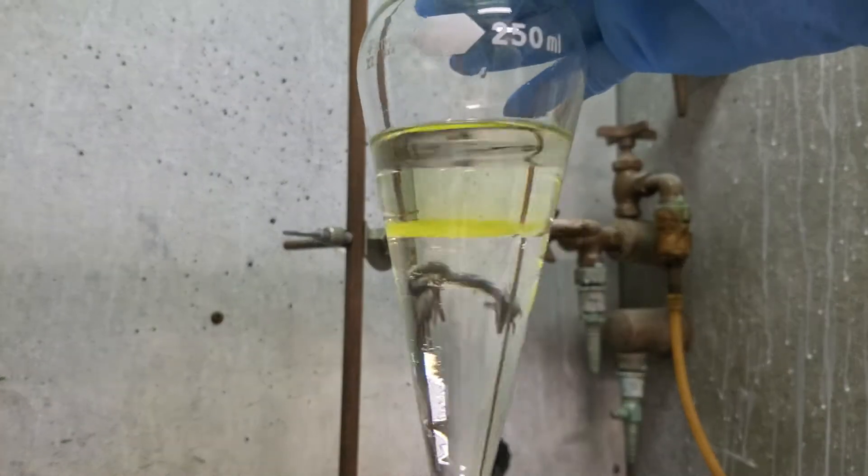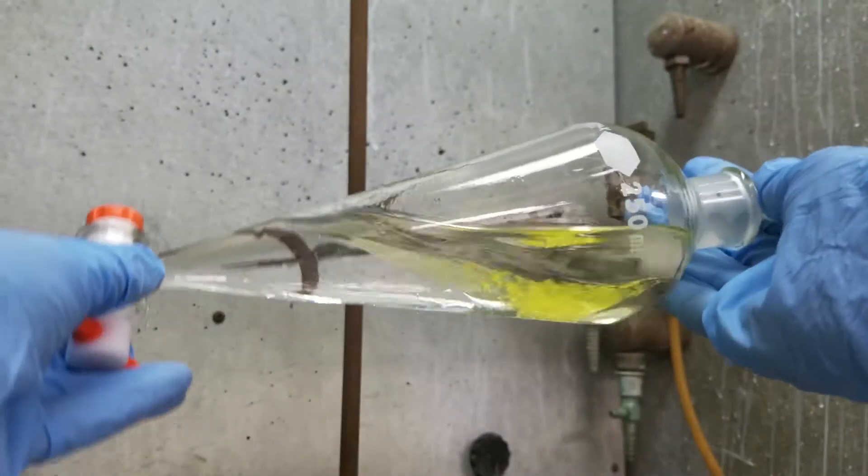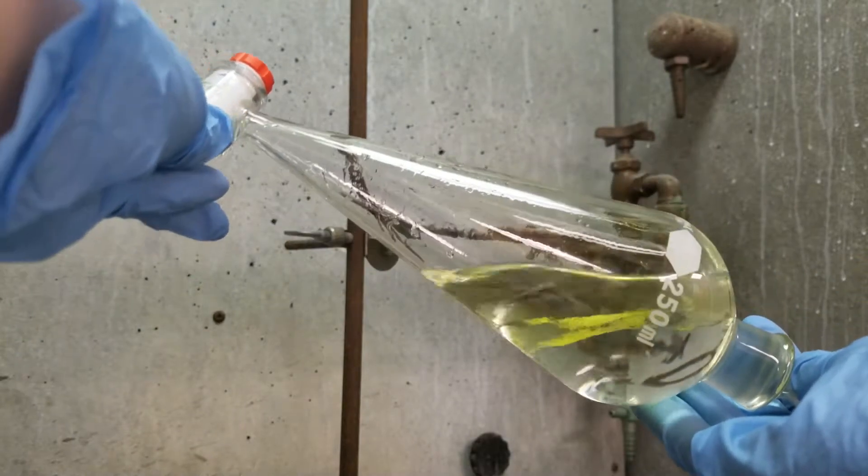Place the stopper in the separatory funnel. Securely pick up the funnel and invert, keeping one hand on the stopper to make sure it's securely in place.